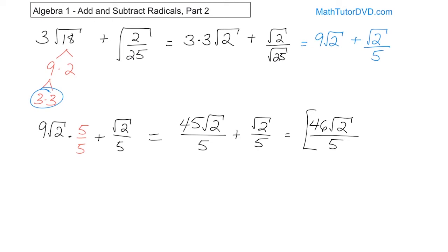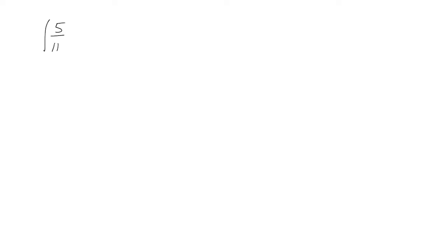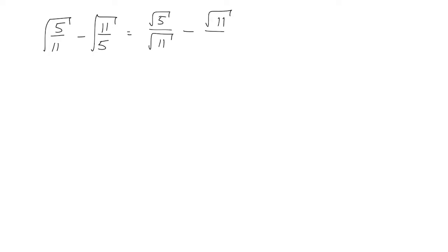Alright, the next problem is really interesting. What if we have the square root of 5 elevenths minus the square root of 11 fifths? We can't subtract them straight away because these are unlike terms — the fractions are totally different. So we'll do the only thing we really can: split each into square root of 5 over square root of 11, minus square root of 11 over square root of 5.